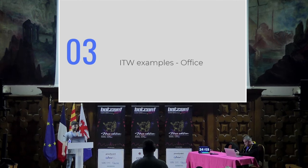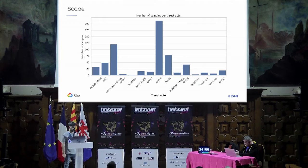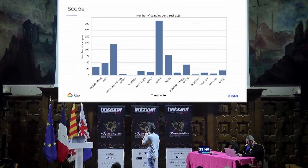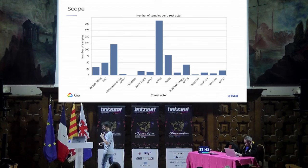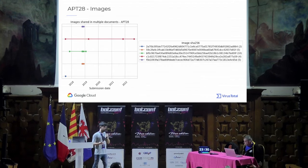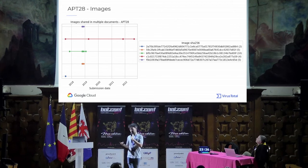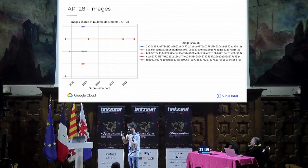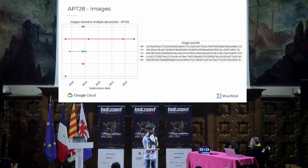Let's see some results from the research. The scope was based on specific threat actors and documents we identified — this is only for Office documents, not PDFs. This is an example of APT28 images used in their documents. All the hashes on the left are related to images found within APT28 Word documents. On the right side you have the number of documents where that specific image was found in VirusTotal. If you see at least one bullet, there are two or more samples identified using that specific image.